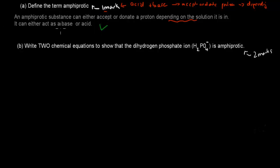And for the second part, it says write two chemical equations. So obviously you need to write two chemical equations to show that the dihydrogen phosphate ion H2PO4- is amphiprotic. In this case, what I would recommend is you simply quickly write the actual equation, but maybe give a quick explanation as well. So a quick explanation, and then you write the actual equation.